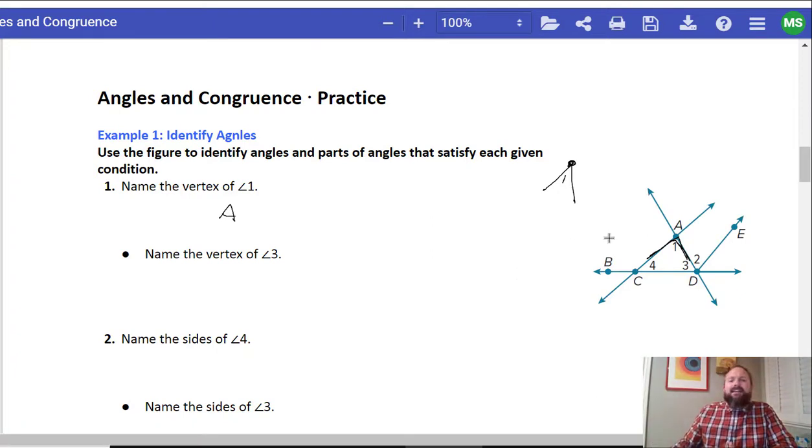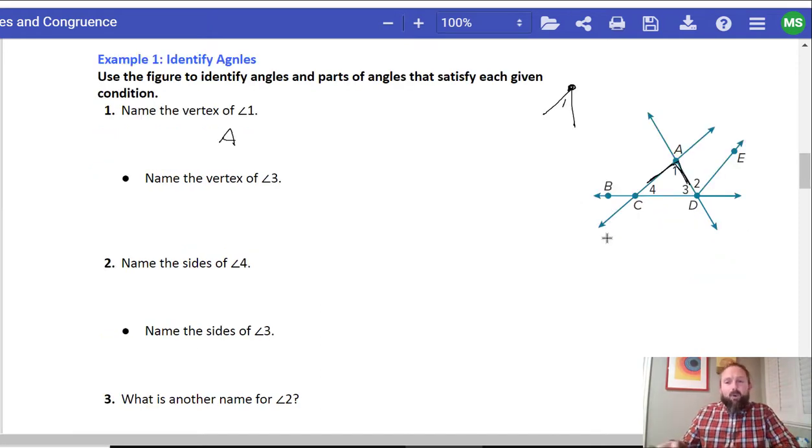Now, the next one it says is, name the sides of angle four. Well, angle four might have a vertex of C, but the sides are CA and what's the other side, CD. Now, we could probably say it's DC and AC, but if the vertex is C, you'd probably want to be like, C to A and C to D. But that's just my opinion.